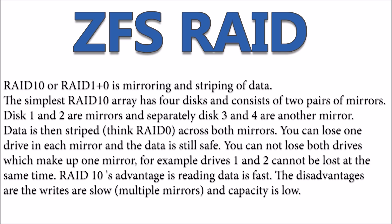Let's look at RAID 10, or RAID 1 plus 0. It is a combination of mirroring and striping of data. The simplest RAID 10 configuration has four disks consisting of two pairs of mirrors — disk 1 and disk 2 are mirrors, disk 3 and disk 4 are another mirror. Inside the RAID, you'll have mirrors of the drives within itself. The advantage of RAID 10 is that reading data is super fast; the disadvantage is that writes are slow because there are multiple mirrors within that RAID.